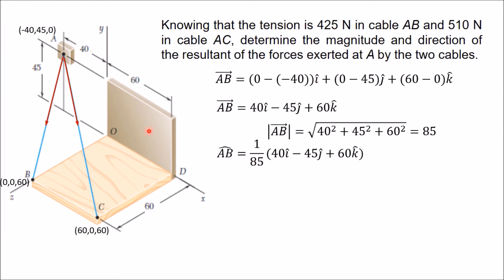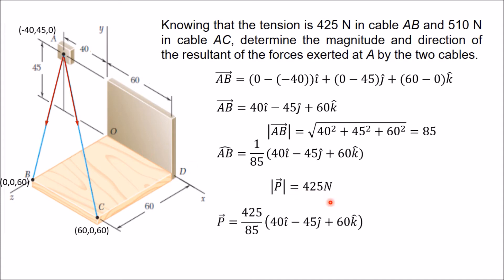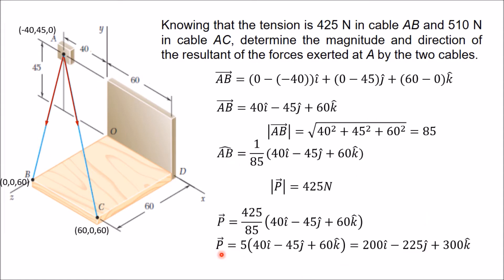Assume this force as P. The magnitude is given as 425 N. So force vector P equals 425 multiplied by the unit vector in the direction of AB. When you simplify, you get P = 200i − 225j + 300k.